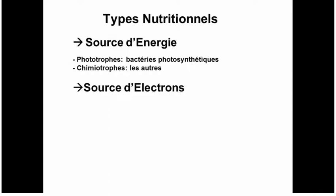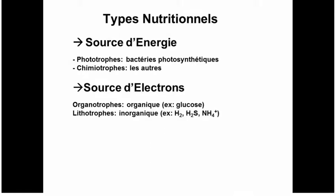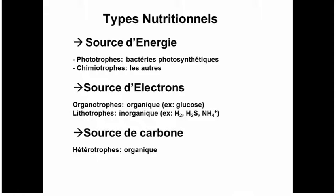The second characteristic is the source of electrons used to produce reduced biochemical molecules like fatty acids for membranes. This can be organic sources of electrons, in which case the bacteria are called organotrophs, or inorganic sources, in which case they are called lithotrophs. And the third characteristic is the source of carbon to build cell structures, which can be organic or inorganic — heterotrophs or autotrophs. So there are three characteristics with two categories each, giving eight theoretical possibilities.